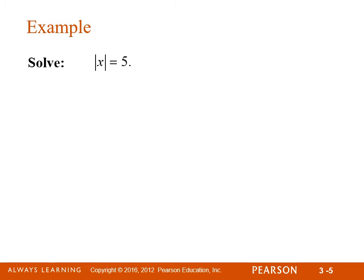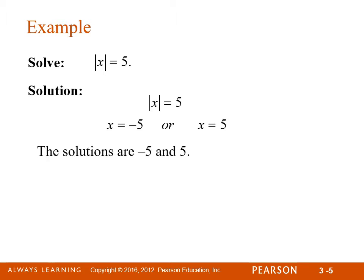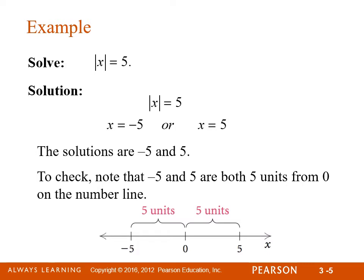Solve the absolute value of x equals 5. When the absolute value of an expression equals a number, once we've isolated the absolute value on one side, we drop the absolute value notation — the two vertical bars — and set it equal to the positive and negative of the answer. So the solutions are negative 5 and 5. Both 5 and negative 5 are 5 units from 0, so this is indeed true.